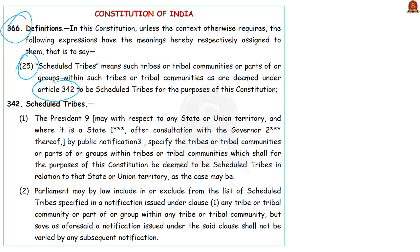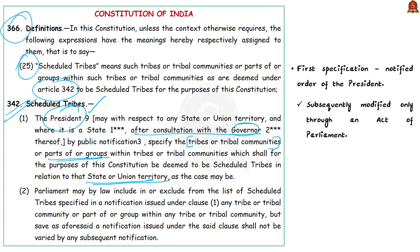The Indian Constitution defines scheduled tribes under Article 366, Clause 25. As per this article, scheduled tribes are those communities scheduled in accordance with Article 342 of the Constitution. Article 342 specifies that the President may specify tribes, tribal communities, or parts or groups within them as scheduled tribes for the purposes of the Constitution. This provision is applicable to any state or union territory. In case of states, this can only be done after consultation with the governor, by public notification, as per Clause 1 of Article 342.